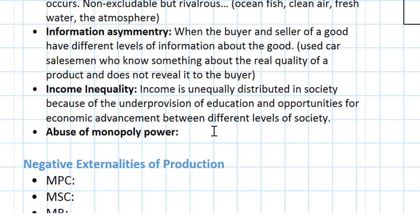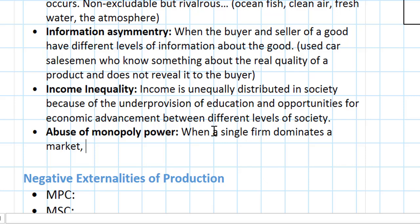The last type of market failure we'll study — more so in our next unit when we examine the theory of firm behavior — is the abuse of monopoly power. When a single firm dominates a market, monopolies tend to produce less than the socially optimal level of that good and charge a price that is higher than the price that would be charged in a more competitive market.